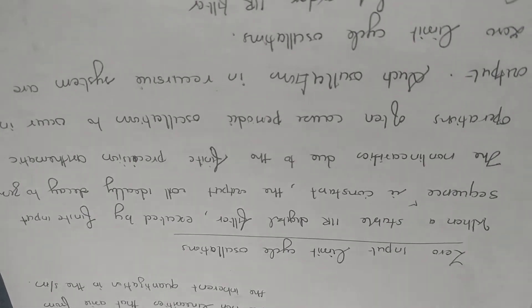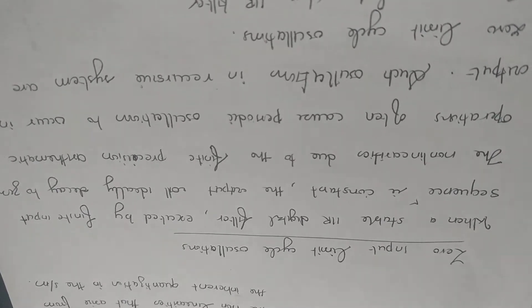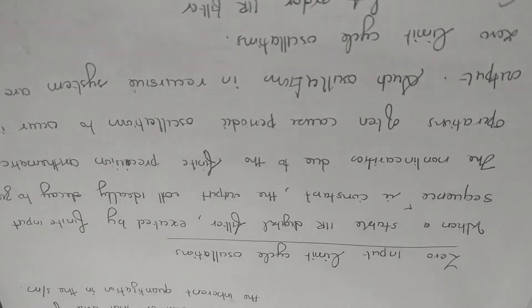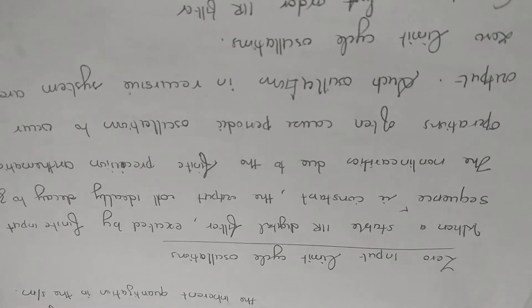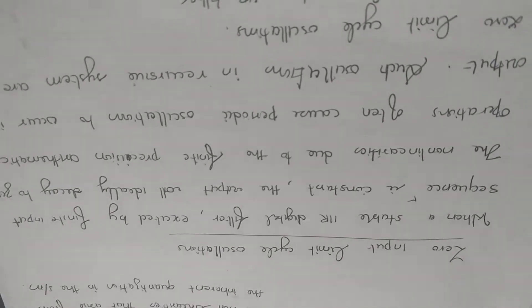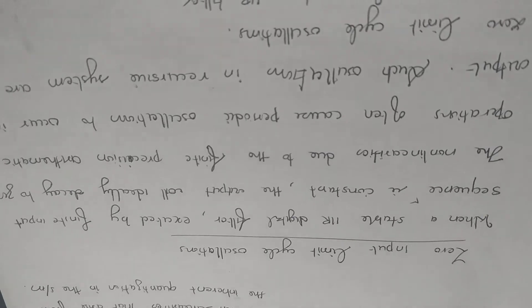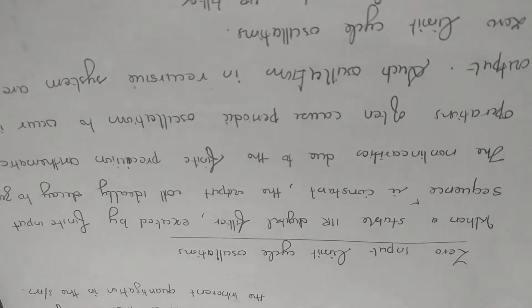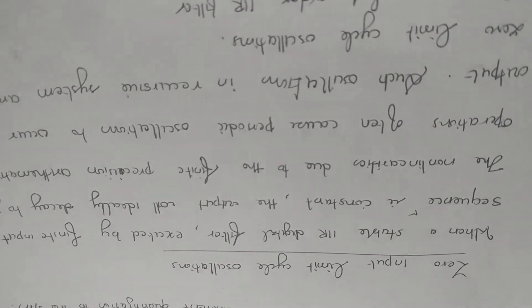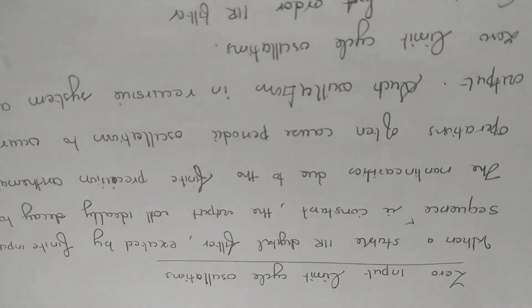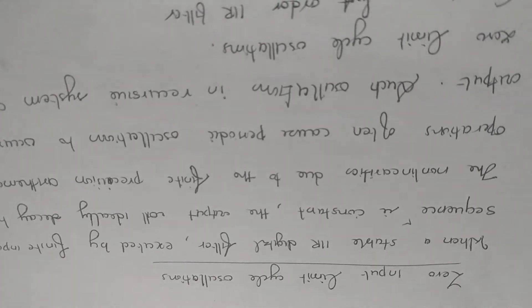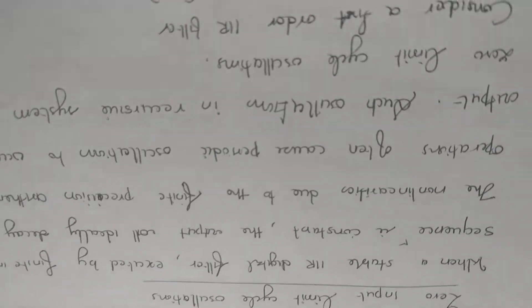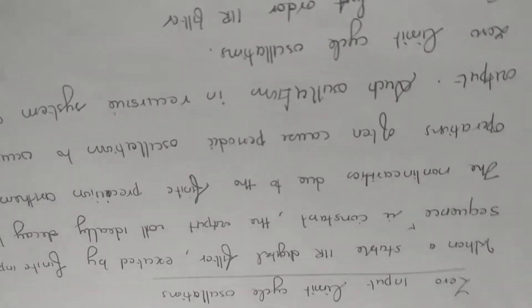When we have finite precision arithmetic and we perform rounding or truncation, a non-linearity is introduced. Due to the presence of this non-linearity, periodic oscillations appear at the output. Those oscillations occurring in a recursive system with zero input are called zero input limit cycle oscillations.